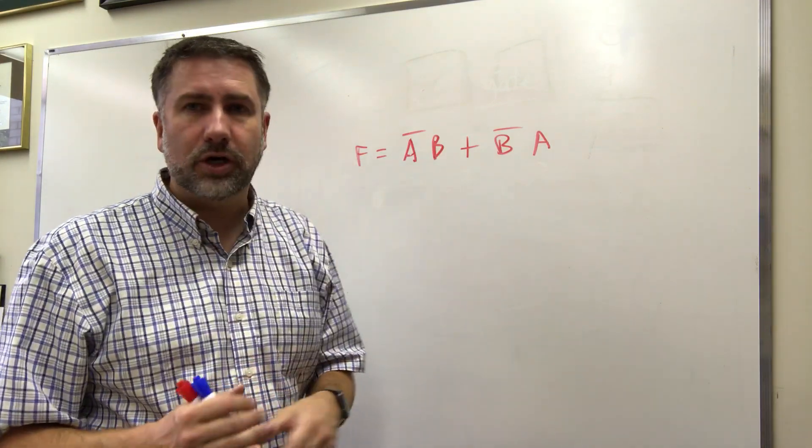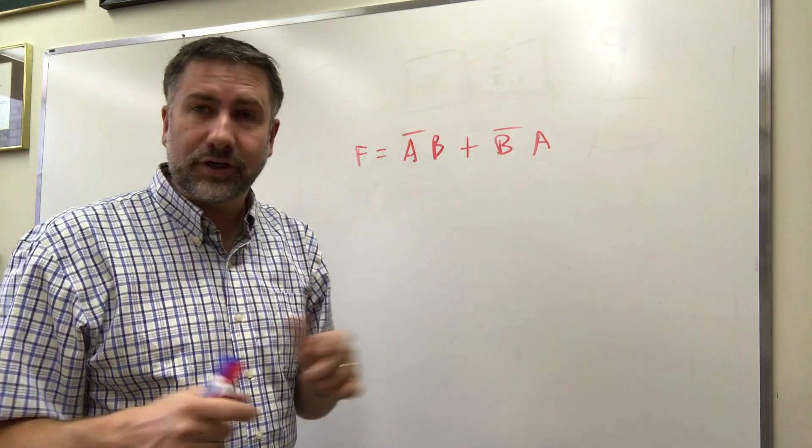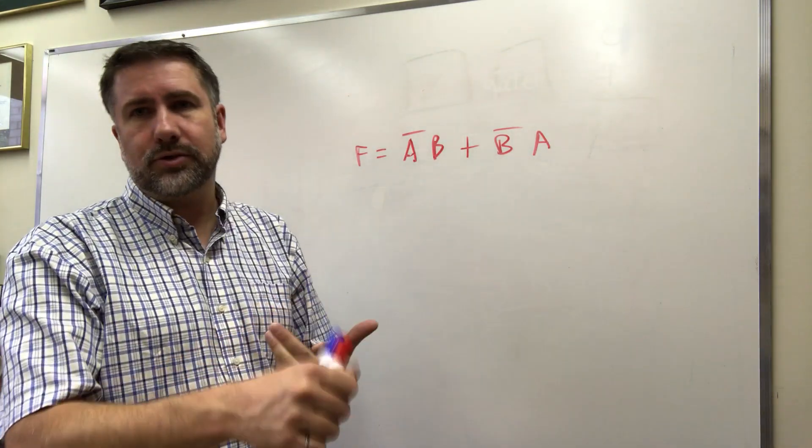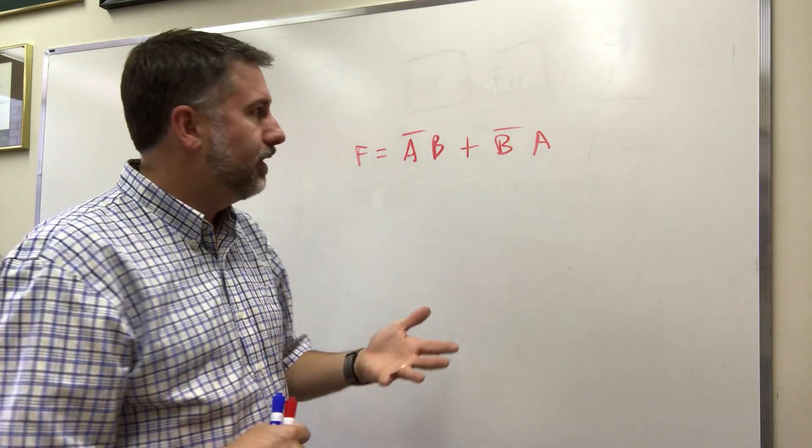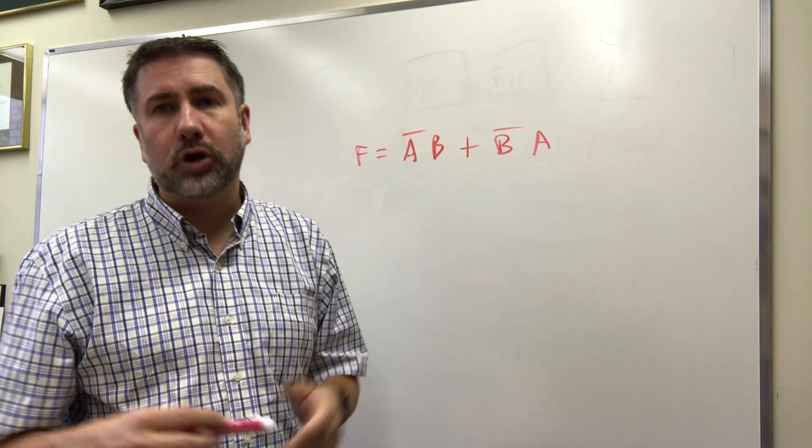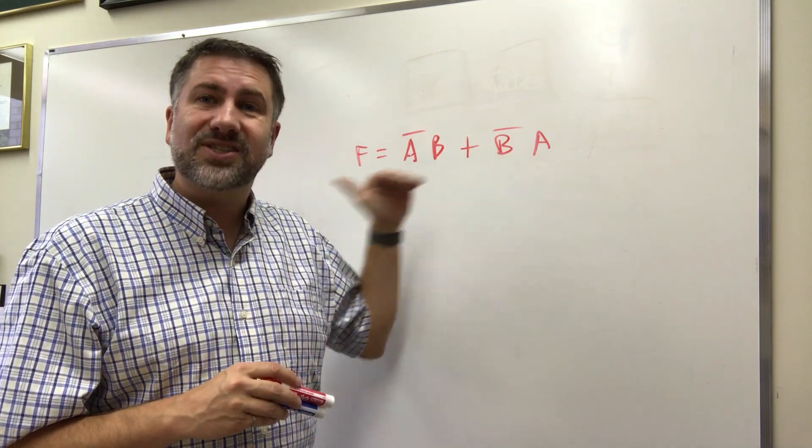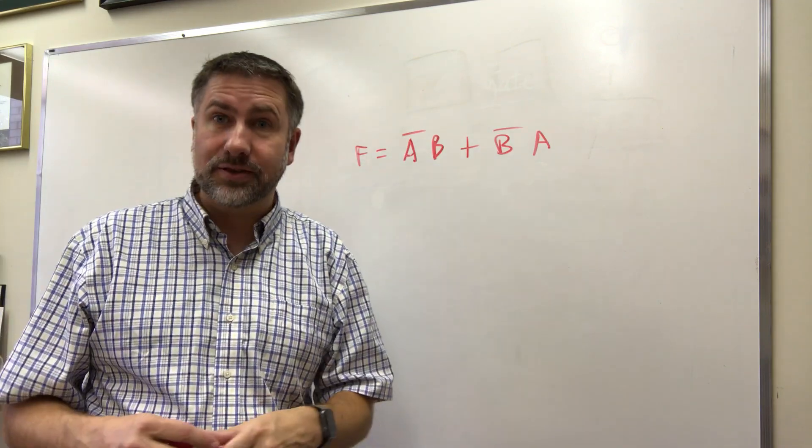A few videos ago we saw we had seven or eight different kinds of gates: and, or, not, exclusive or, exclusive nor, etc. That's fine but exclusive or gates, exclusive nor gates, those are a little bit more complicated. Sometimes we want to build a device that only uses the smallest number of types of gates as well.